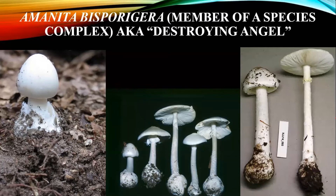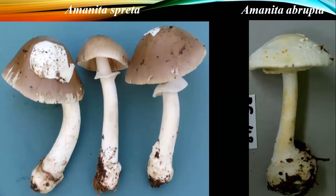We also have the deadly poisonous ones called the destroying angels - and it's been discovered there's more than one different kind. On the far left you can see a young fruiting body with the saccate volva at the base, no warts on top, pure white. The middle shows different growing stages, young to older. The summer ones are probably Amanita bisporigera, but in fall we see larger, more robust ones that can be different species - but they're all deadly poisonous.